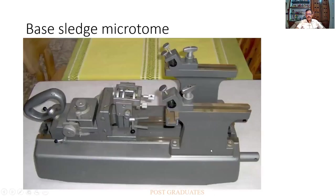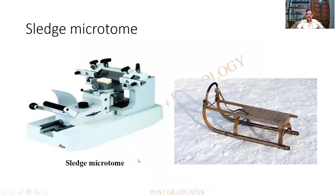Here is a closer view of the base sledge microtome — you can appreciate how sturdy and thick it is. There is a block holder and a knife holder. The tissue block is kept and it moves in a sledge-like manner, cutting against the knife. You can see the tissue placed on top with the knife over here, and it slides against it — hence the name sledge microtome.